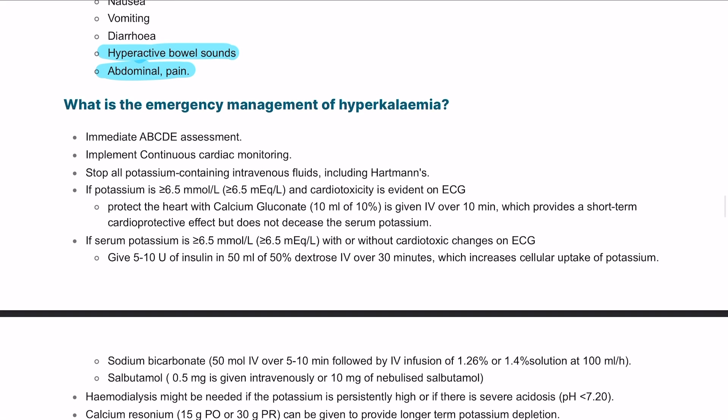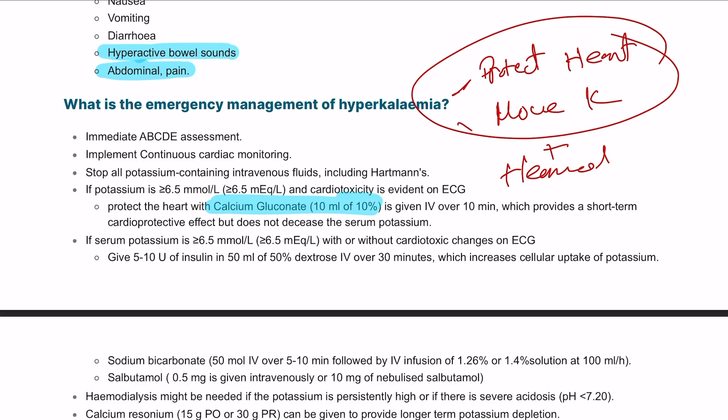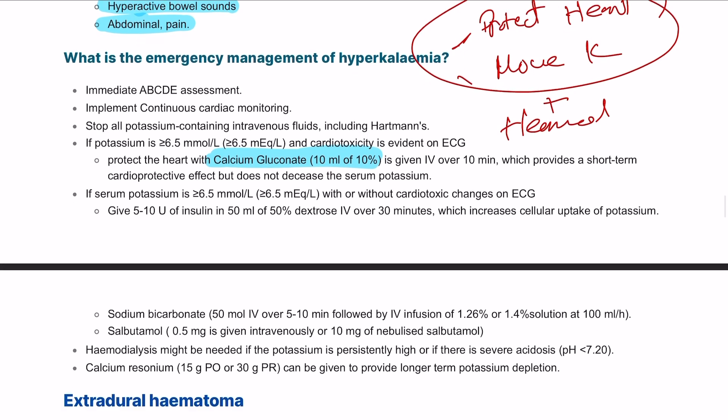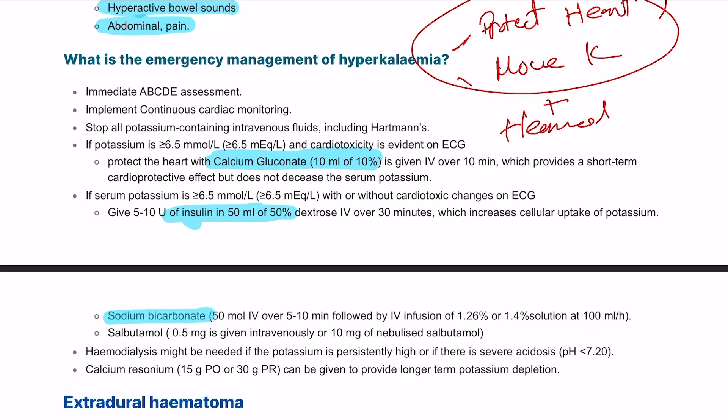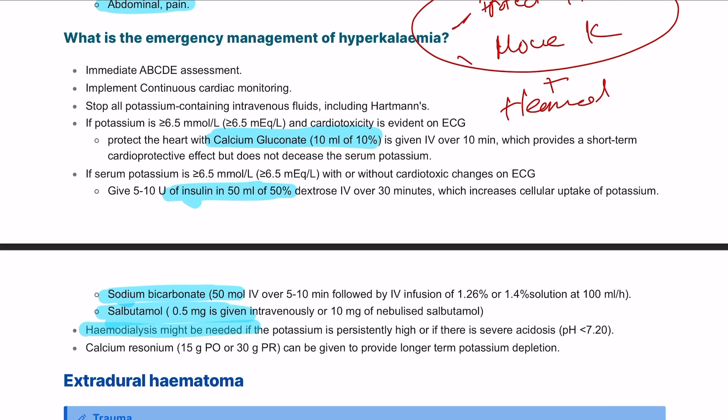The management target is to protect the heart and to move the potassium level. If you fail, you need to do hemodialysis. To protect the heart, give calcium gluconate 10 percent or 10 milliliters of the 10 percent. We can give insulin, sodium bicarb, and salbutamol to move the potassium inside the cell. Finally, we can do hemodialysis if the patient has persistently high potassium level.